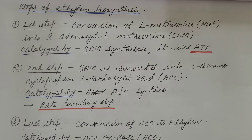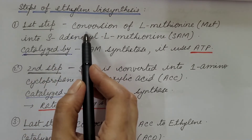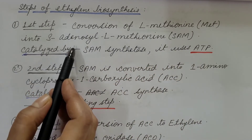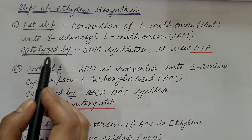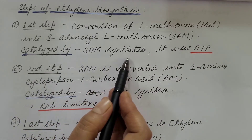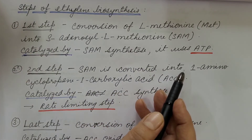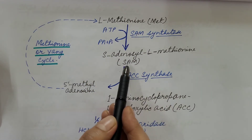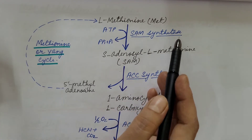Now let us understand ethylene biosynthesis step by step. The first step is the conversion of L-methionine (Met) into S-adenosyl L-methionine (SAM). This step is catalyzed by SAM synthetase, and this enzyme uses ATP.